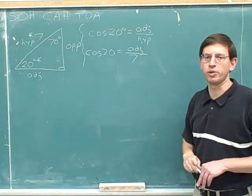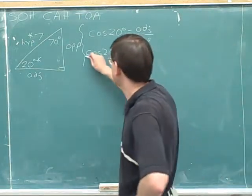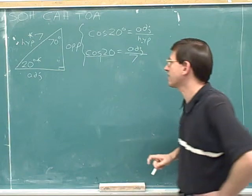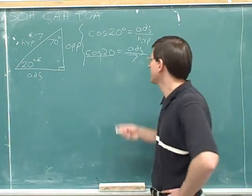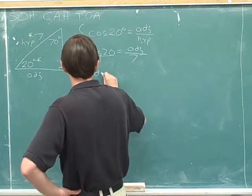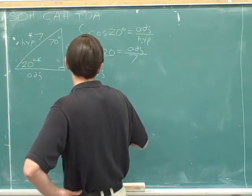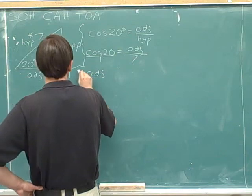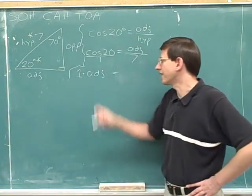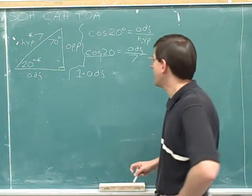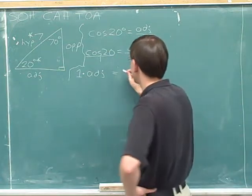Now we need to get rid of this fraction by cross-multiplying. First of all, give yourself a fraction on both sides by putting the left-hand side over 1. And now we can multiply diagonally. Well, 1 times the adjacent side is just the adjacent side. I'll just write that out one more time. 1 times the adjacent side. And we have 7 times the cosine of 20.